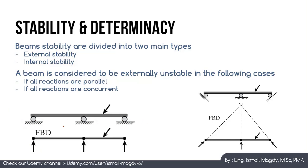but the horizontal component doesn't have any reaction, which means the beam will start moving in that direction — ignoring friction between the roller and the beam. This is another condition for an externally unstable beam. Here you can see that all support points and reactions are concurrent at the same point. This means that after applying any force, the beam will start rotating and will not be stable — it is considered an externally unstable beam.